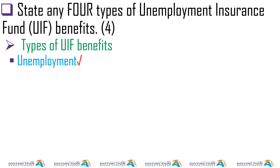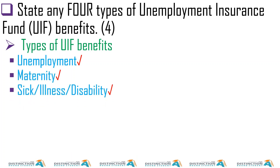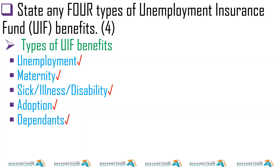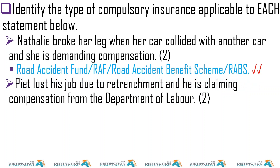State any four types of UIF benefits. We did this — unemployment, maternity, illness, adoption, and dependence. We explained each for that nine-mark question. Initially I gave you four excluding the illness one — adoption, dependence, maternity, and unemployment.